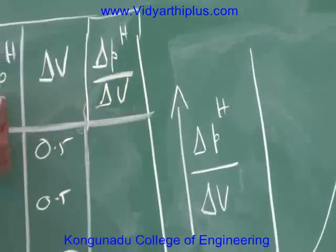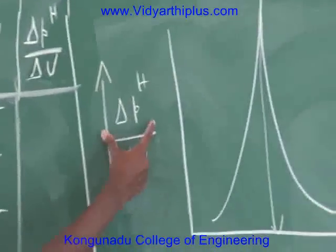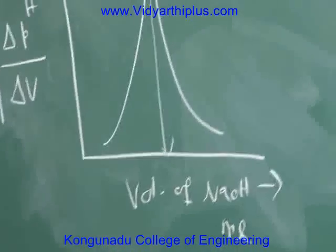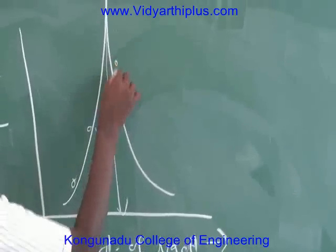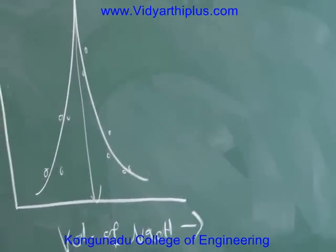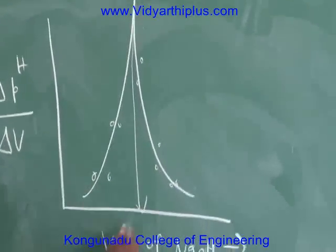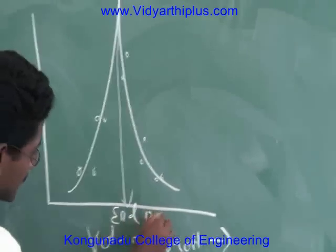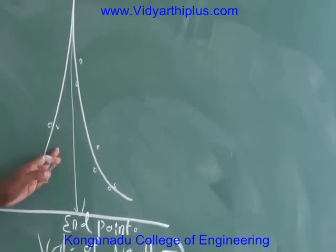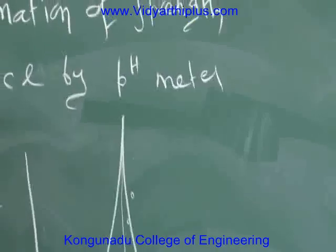Now I am dividing the del pH value by the del V value to get del pH/del V. I then plot a graph between del pH/del V and the volume of NaOH. This graph shows a peak which indicates the correct end point. By substituting the volume of NaOH at the end point, we can calculate the strength of HCl.